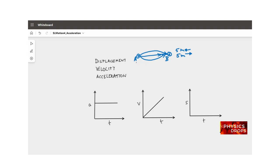There is a change in position, but what if that change in displacement happens in 2 seconds, or 5 seconds, or 10 seconds? The quantity that measures this difference is called velocity. Velocity is the rate of change of displacement. I can go from A to B in 2 seconds, which means I have a faster velocity compared to going from A to B in 10 seconds, which is a lesser velocity.